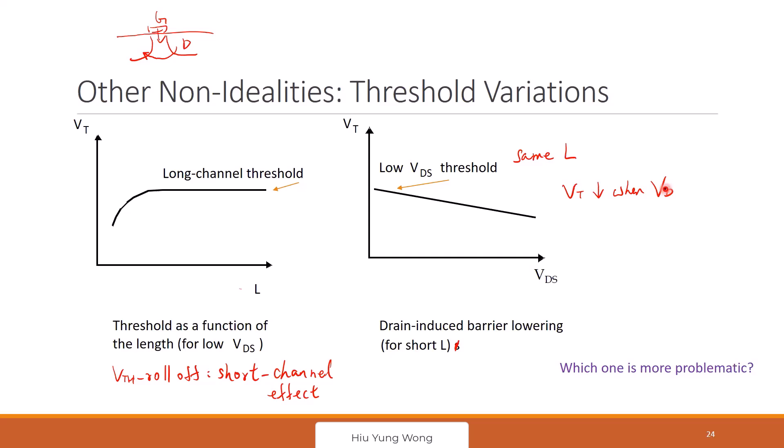And this is due to the same reason. When I increase the drain voltage, it will have a better control. You try to pull down the barrier, right? The gate cannot stop it because it's too far away, right? I have a bad design of the device.